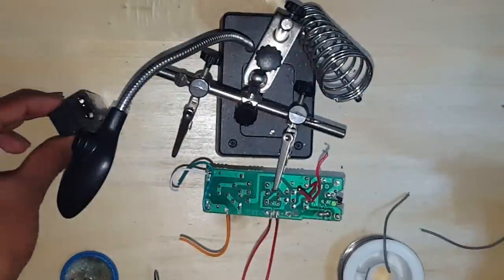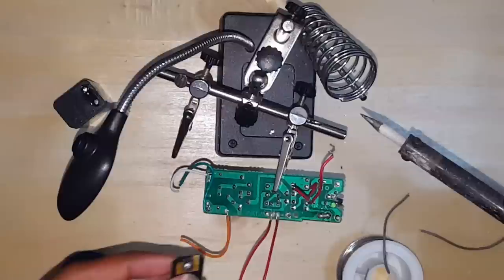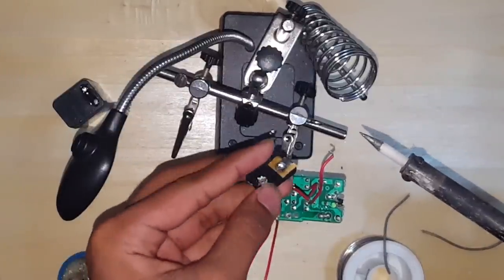Once you have done that, keep the battery aside and take a 9-volt battery clip and solder it to those wires.